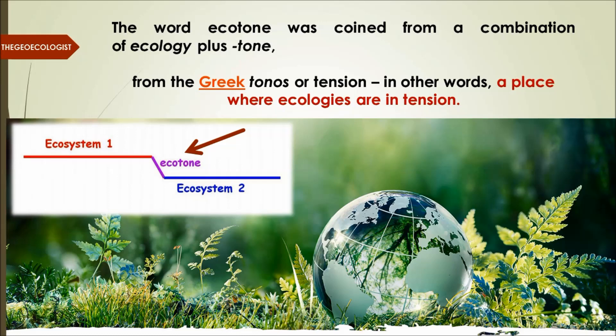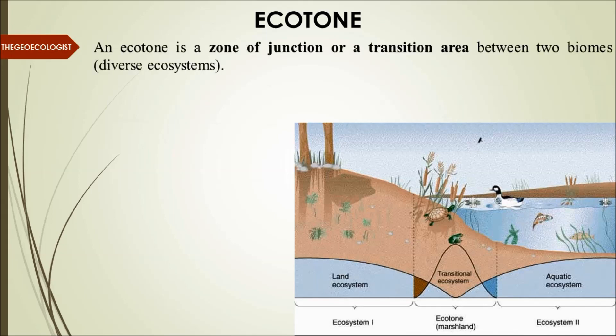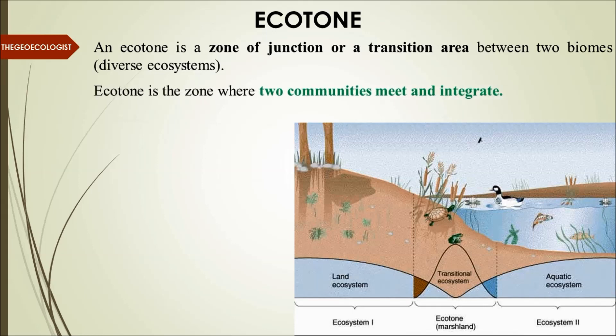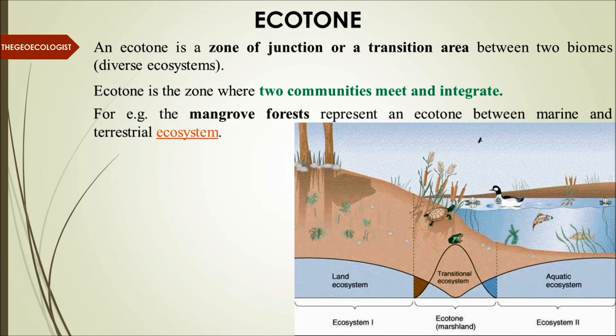Ecotone is a zone of junction or a transition area — not ecosystem A nor B, but somewhere in between two biomes, that is two diverse ecosystems. Nature does not fix its boundaries sharply the way humans fix their home's boundaries. There is a smoothed transition area through which another ecosystem begins. Ecotone is the zone where two communities meet and integrate. For example, mangrove forests represent an ecotone between marine and terrestrial ecosystems.